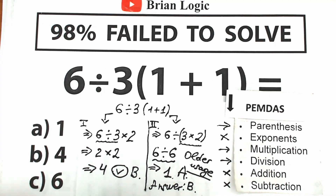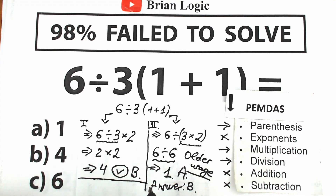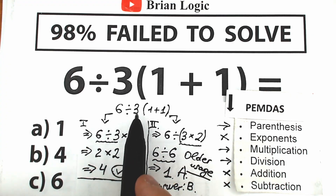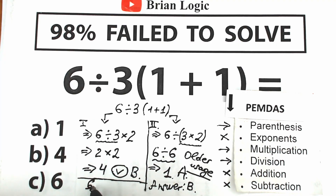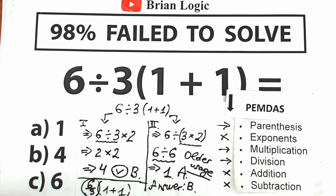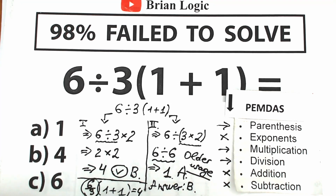Here's a third interpretation that helps a lot. Imagine you write 6 divided by 3 as a fraction — 6 over 3 — times 1 plus 1 in parentheses. That fraction 6 divided by 3 equals 2, and then 2 times 2 equals 4. So in this fraction interpretation, as you can see, the first approach is also the correct approach.